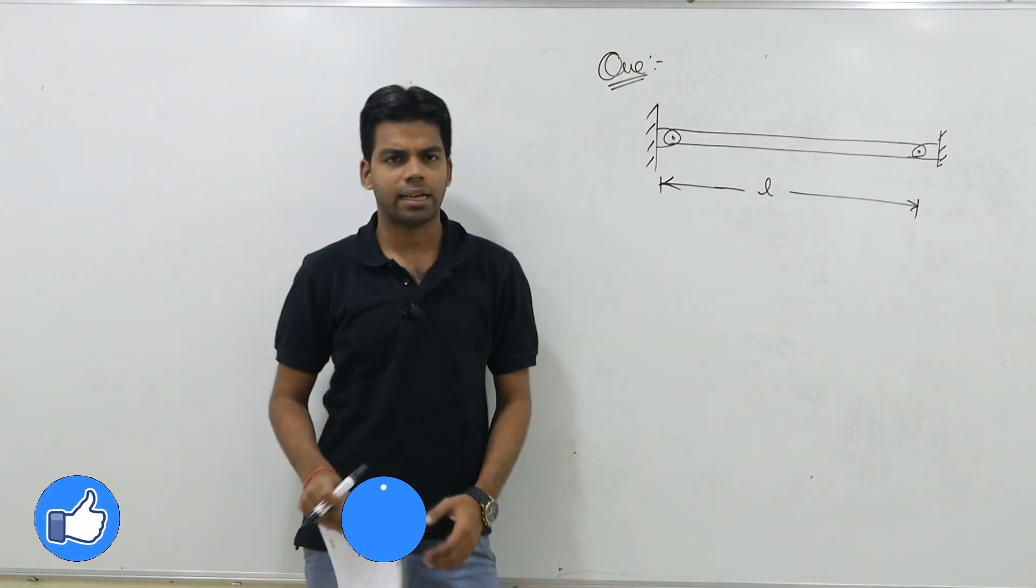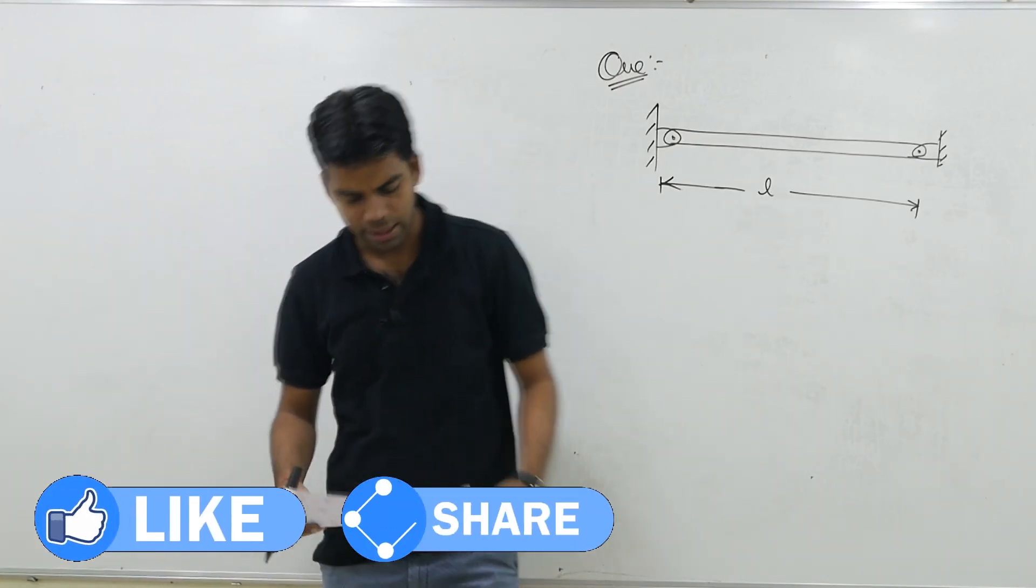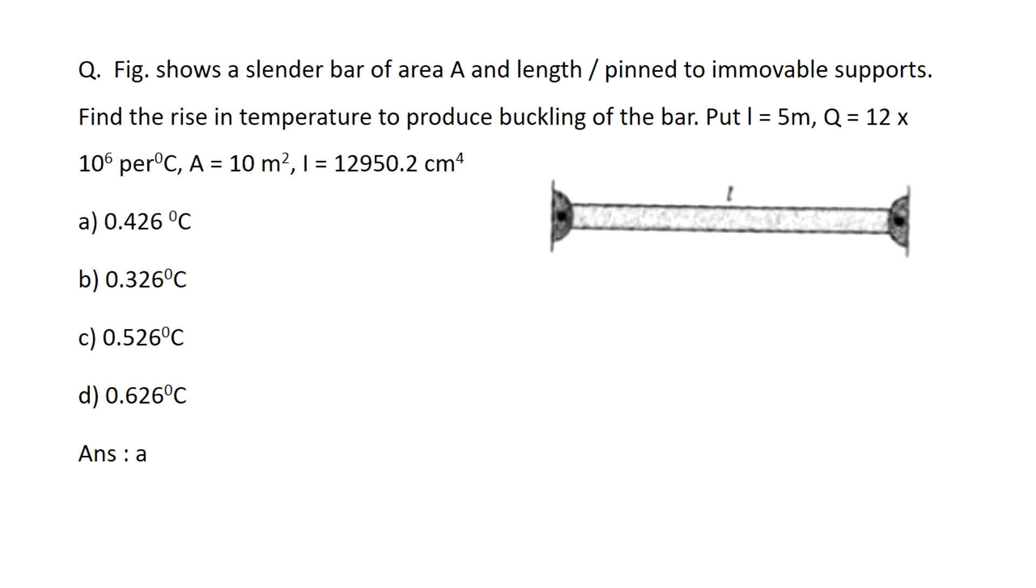Hello everyone and welcome to SNKT Academy. Today's GATE challenge question is: figure shows a slender bar of area A and length L pinned to immovable supports. Find the rise in temperature to produce buckling of the bar. Given: L equals 5 meter, alpha equals 12 into 10 to the power minus 6 per degree centigrade, area A equals 10 meter square, and I equals 12,950.2 centimeter to the power 4.